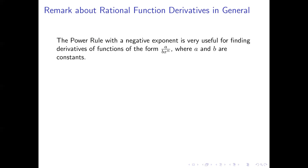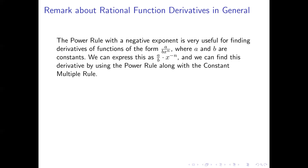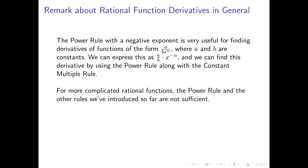This method using a negative exponent will work to find the derivative of any function that can be expressed in the form a over b times x to the power n, where a and b are constants. We can express that as a constant times x to the power negative n, apply the power rule to x to the power negative n, and deal with the a over b coefficient using the constant multiple rule.